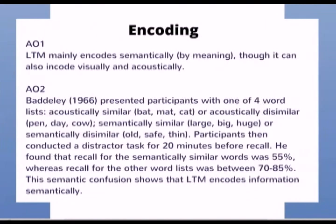Long-term memory encodes semantically — by meaning — although it can also encode visually and acoustically. Baddeley presented participants with one of four word lists: acoustically similar, acoustically dissimilar, semantically similar, or semantically dissimilar. Participants then conducted a distractor task for 20 minutes before recall. He found that recall for semantically similar words was 55%, whereas recall for other word lists was between 70 and 85%. This semantic confusion shows that long-term memory encodes information semantically.